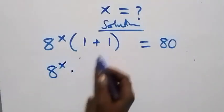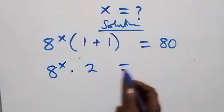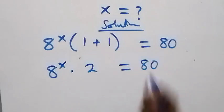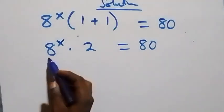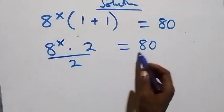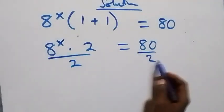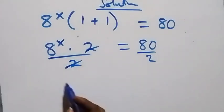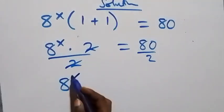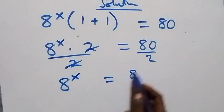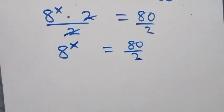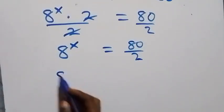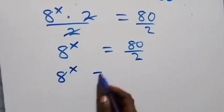The same thing gives us 8 raised to power x times two equals 80. From here we divide both sides by two — the 2s cancel each other — and we have 8 raised to power x left equals 80 over 2.